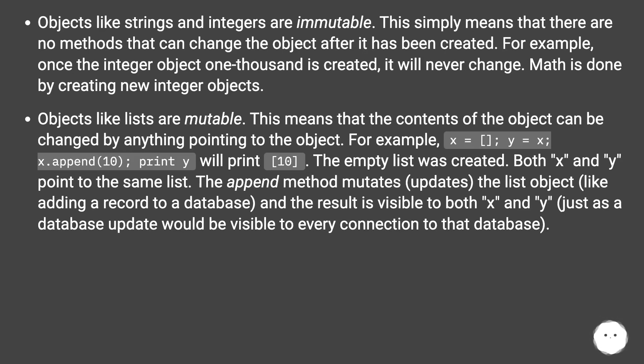Objects like lists are mutable. This means that the contents of the object can be changed by anything pointing to the object. For example, x equals y equals empty list, x dot append 10, print y will print 10. The empty list was created. Both x and y point to the same list.